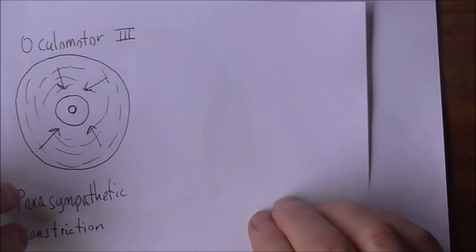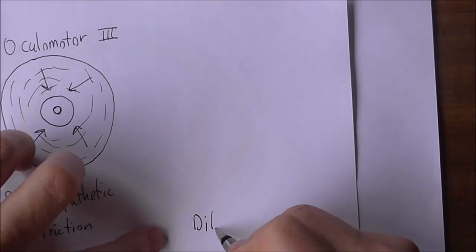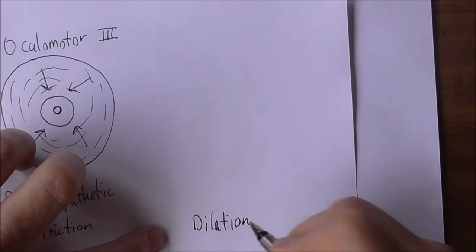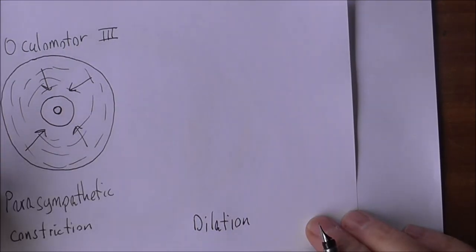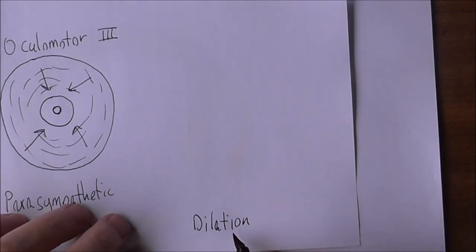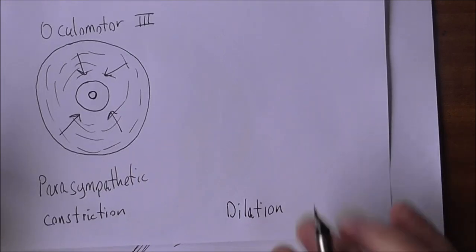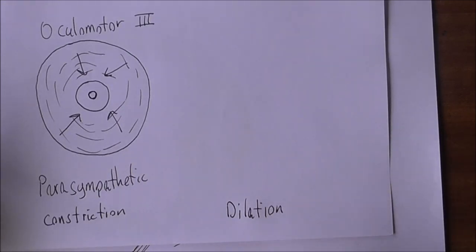Now the converse of constriction, of course, is pupil dilation. The pupils can also dilate. So when we go into a dark room, the pupils will dilate to let more light in. Just the same as when we're in bright sunlight, the pupils will naturally constrict to let less light in to control the amount of light going into the eyes.